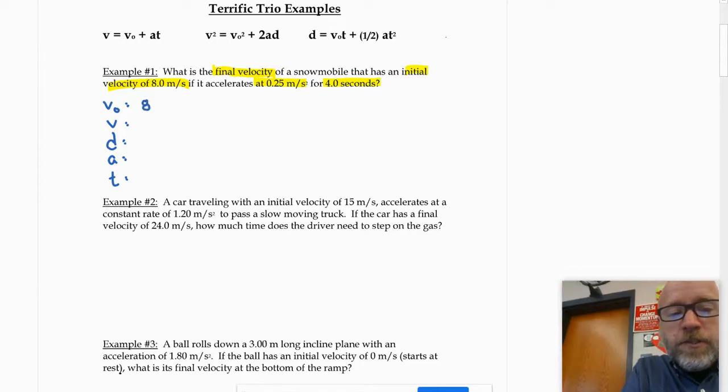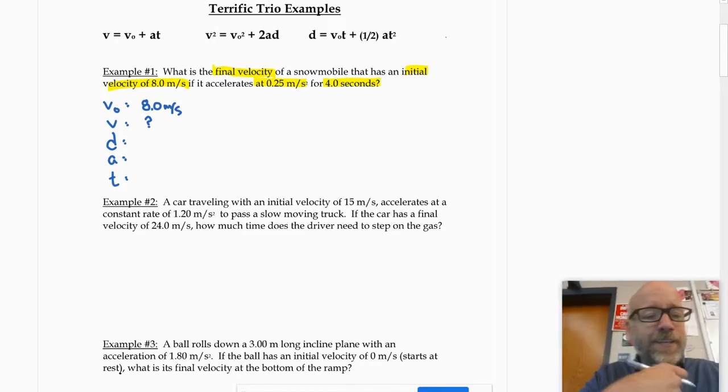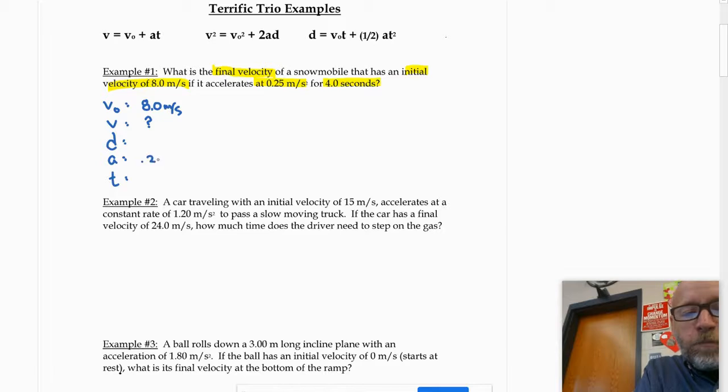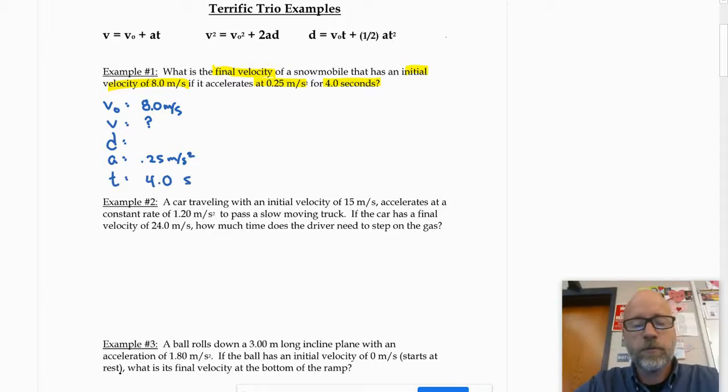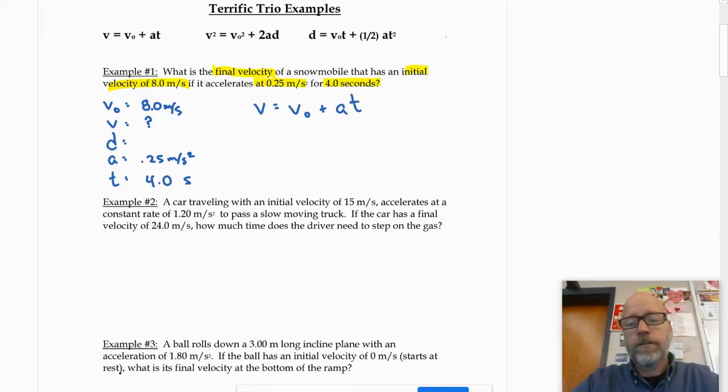And I do this every time I'm doing a terrific trio problem. And all the way through AP Physics 2, I always make a list of the information that is known in a problem. So in this problem, the information that is known, we have V naught, V, D, A, and T. And I just make that chart. And then I start filling it in. Now, the initial velocity was 8 meters per second. The final velocity is what I'm looking for. I'm going to put a question mark there. Displacement? I don't know it. Acceleration is 0.25 meters per second squared. And the time is 4 seconds.